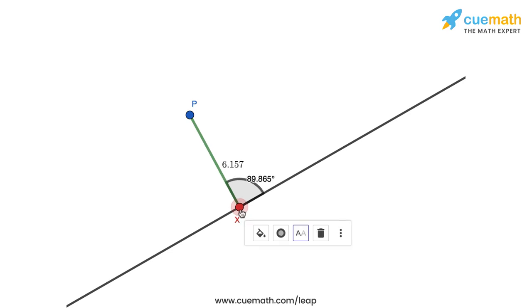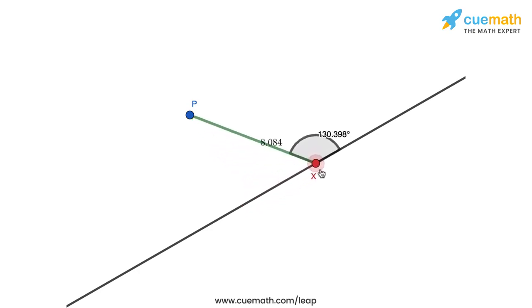And at some point when Px becomes perpendicular to the line somewhere here, this length takes its shortest possible value, and then as x moves towards the other side, the length of Px starts to increase again.